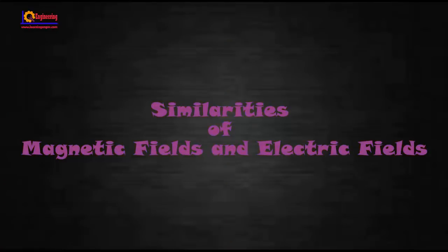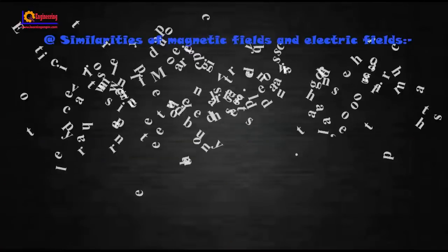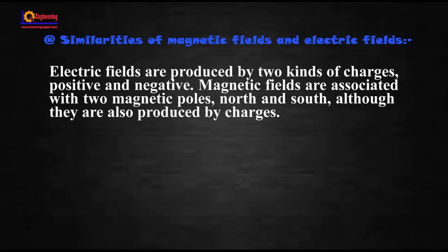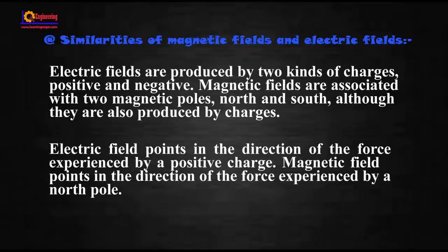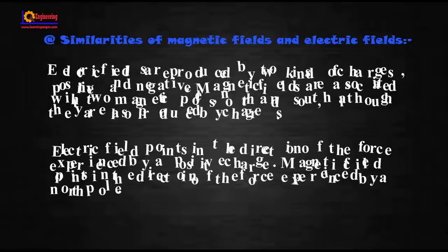Similarities of magnetic field and electric field: Electric fields are produced by two kinds of charges — positive or negative. Magnetic fields are associated with two magnetic poles, north and south, although they are also produced by charges. Electric field points in the direction of the force expressed by a positive charge, while magnetic field points in the direction of the force expressed by a north pole.